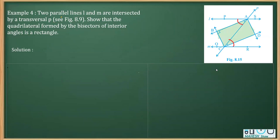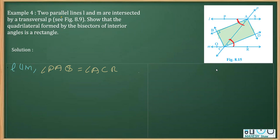Let's write it down. We have l given parallel to m, and the transversal is p. So we can say that angle PAQ should be equal to angle ACR, as these are alternate interior angles with respect to line p and q. Therefore these are parallel, and the reason is alternate interior angles.